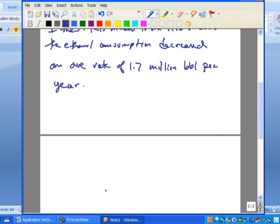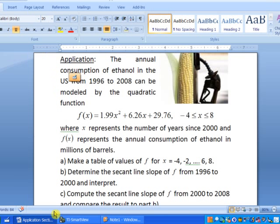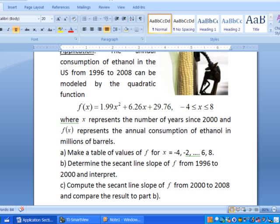All right, now let's take a look at part C. Here, we want to compute the secant line slope of f from 2000 to 2008, and then compare the results to part B.